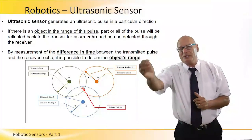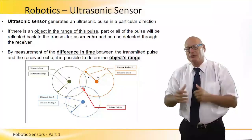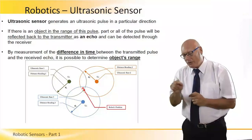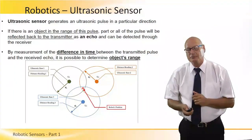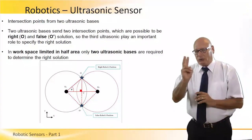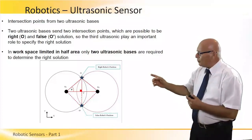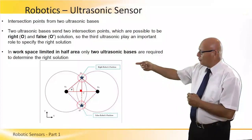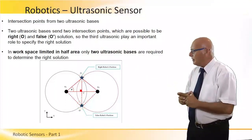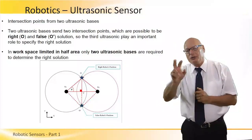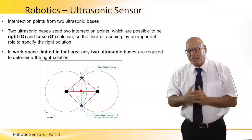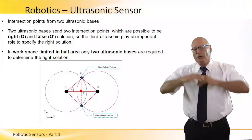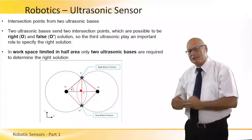As the robot continues to move from one place to another, going between sets of ultrasonic receivers, it will understand based on the difference in time when an ultrasonic wave comes in where it is located and what to do next. Two ultrasonic sensors alone are not enough — two sensors produce two possible points where the robot can be: the two connection points of the two circles. But in a workspace limited to half the area, only two ultrasonic bases are required to determine the right solution. In most cases, we will need three ultrasonic sensors, but when we limit the working envelope to half, meaning the robot can only be on one side, two are enough.